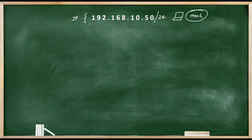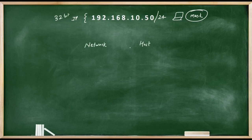We all know that an IP address is 32 bits long and it is divided into two parts: network part and host part. But how do we know which part is the network number and from where the host part starts? We can find this information easily from the subnet mask.